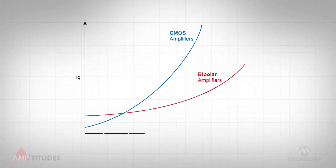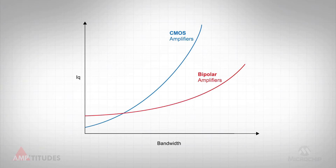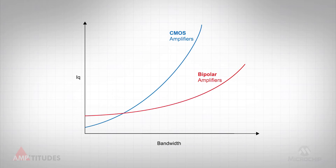First of all, let's take a look at current usage. CMOS is known for low power, as the transistors only draw current when switching states. However, this power advantage over bipolar transistors is only true for slower amplifiers. As the bandwidth increases, a CMOS amplifier's current increases dramatically and soon requires more current than a comparable bipolar amplifier.